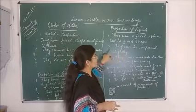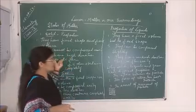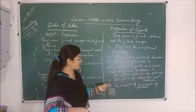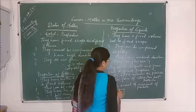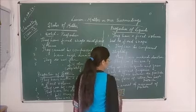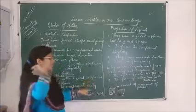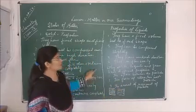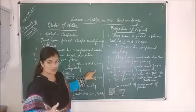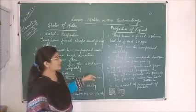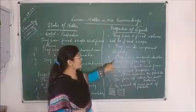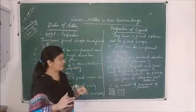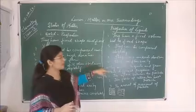Liquids can be compressed lightly, whereas solids cannot be compressed much. The reason is that in liquid there is some intermolecular space, so the force of attraction is also less than in solid. Liquids do not have a fixed shape but they have a fixed volume, and they can fill containers. They have moderate densities — neither as high as solids nor as low as gases — meaning less than solid but more than gas.